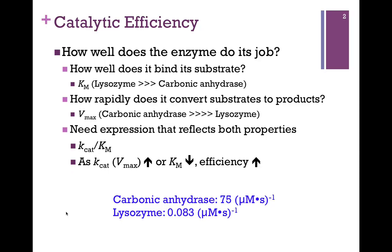Kcat is directly proportional to Vmax. As Kcat increases, or as Km decreases, the efficiency of our enzyme increases. This is just what we expect: the faster it makes product, or the more tightly it binds its substrate, the more efficient it becomes.